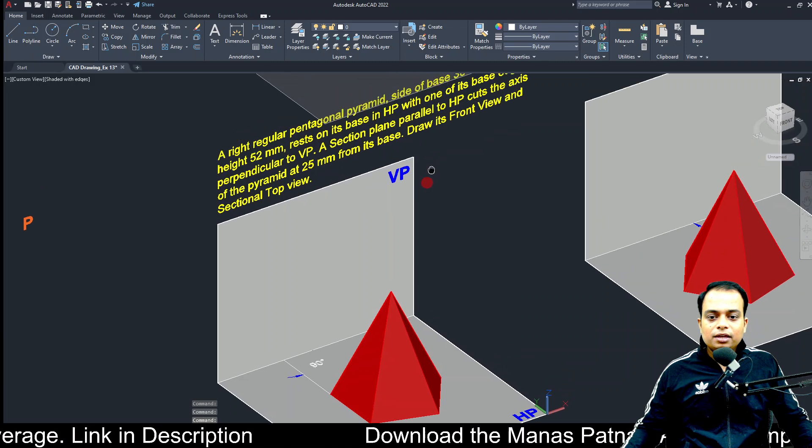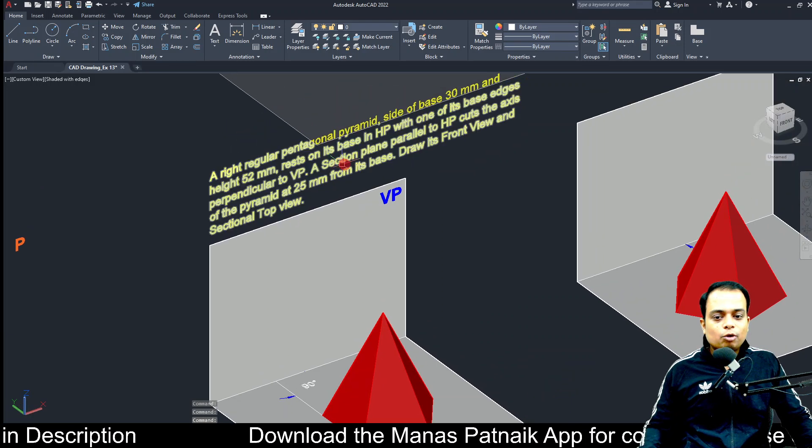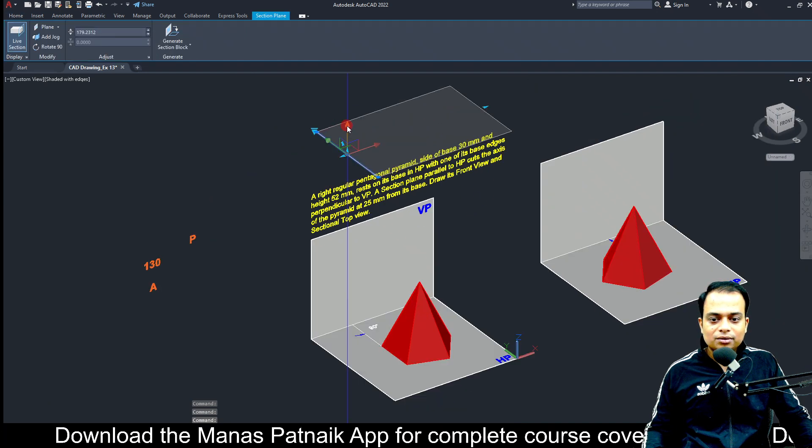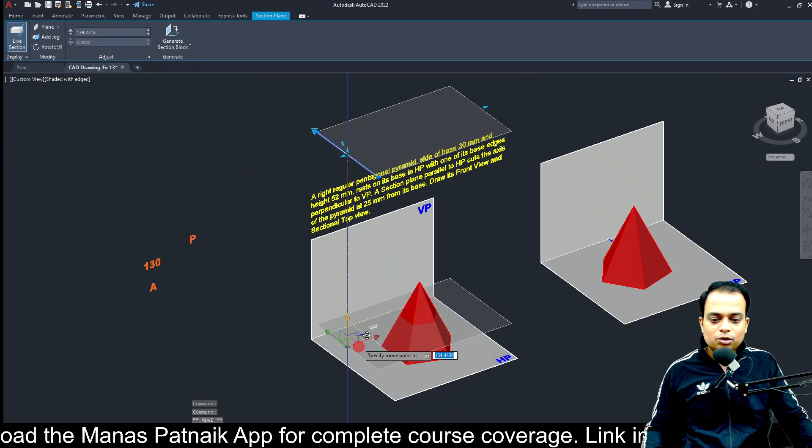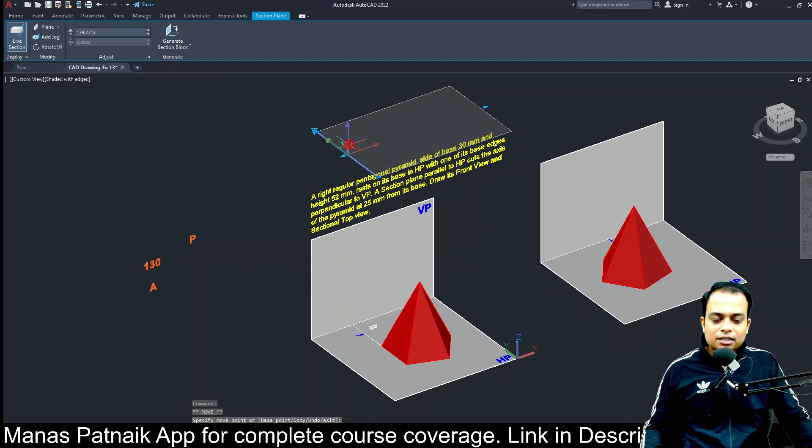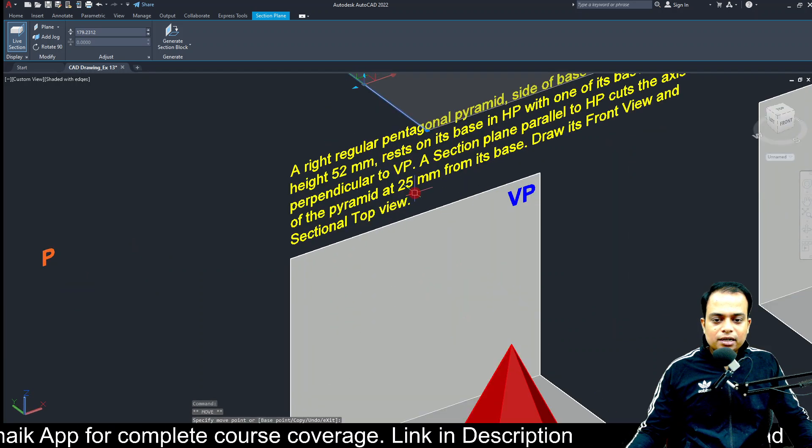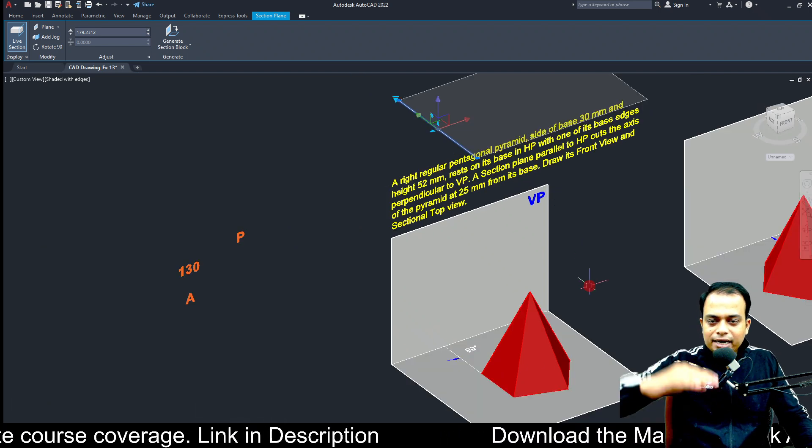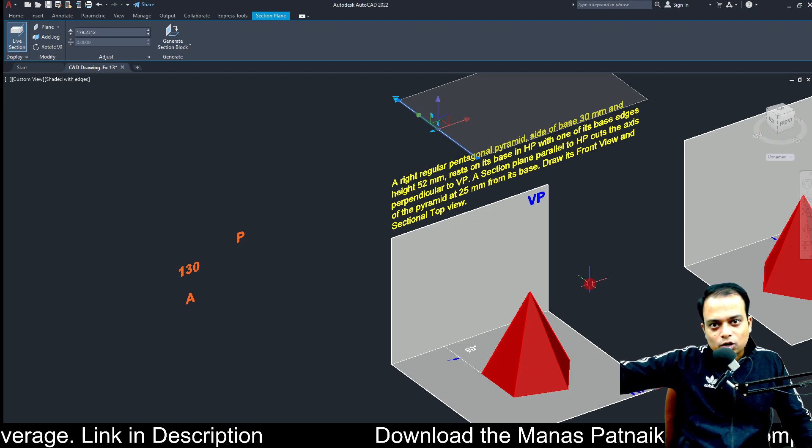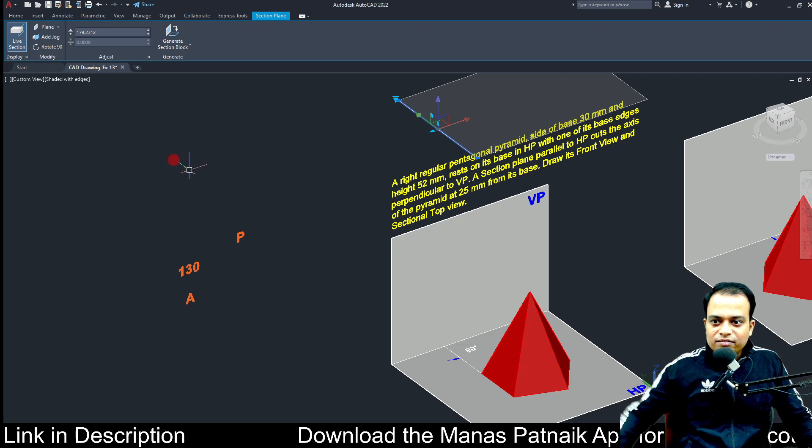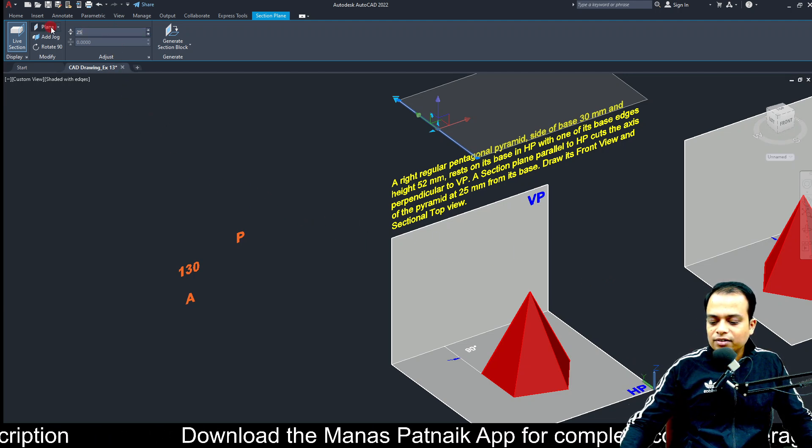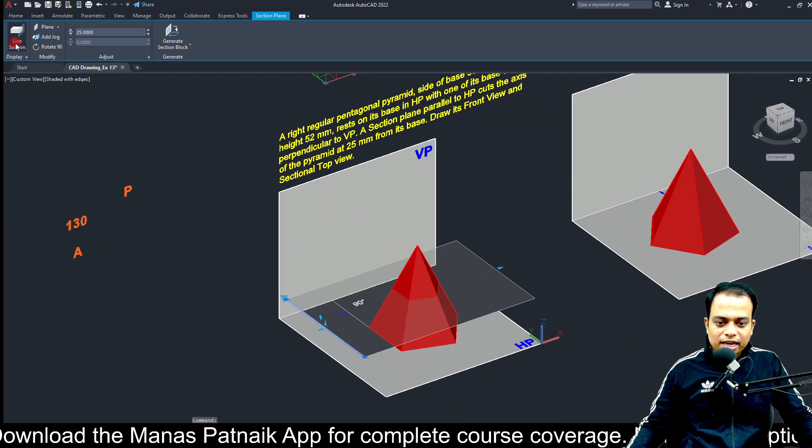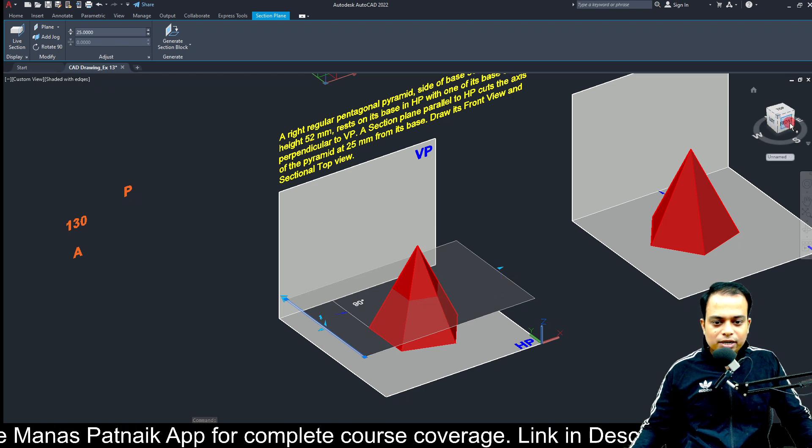If you read the question further, we can get the details about the section plane. It is parallel to HP - this is the section plane, parallel to HP. Secondly, it cuts the axis of the pyramid at 25 mm from the base. With respect to the base, the height at which it is cutting the axis or cutting the entire solid is 25 millimeters. Here I'm going to plug in the value of 25 and let's see where this cutting plane is.